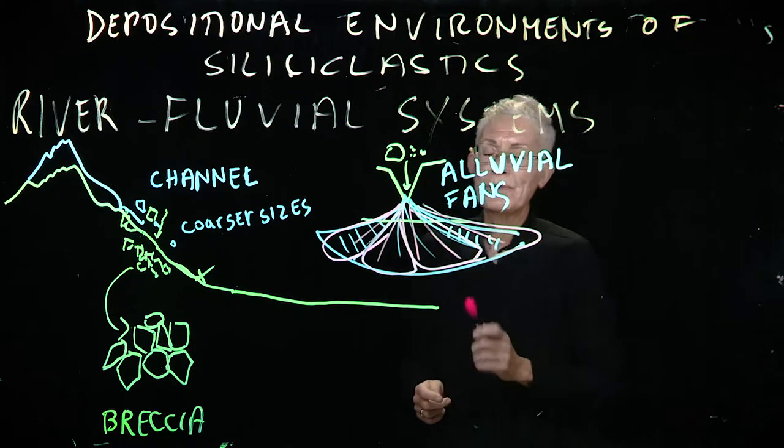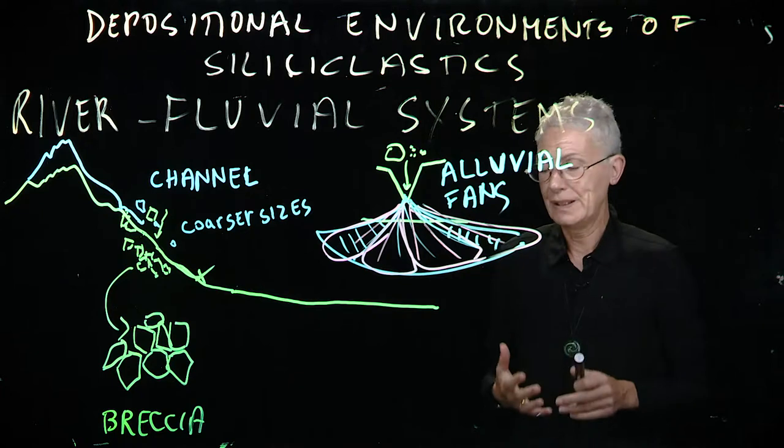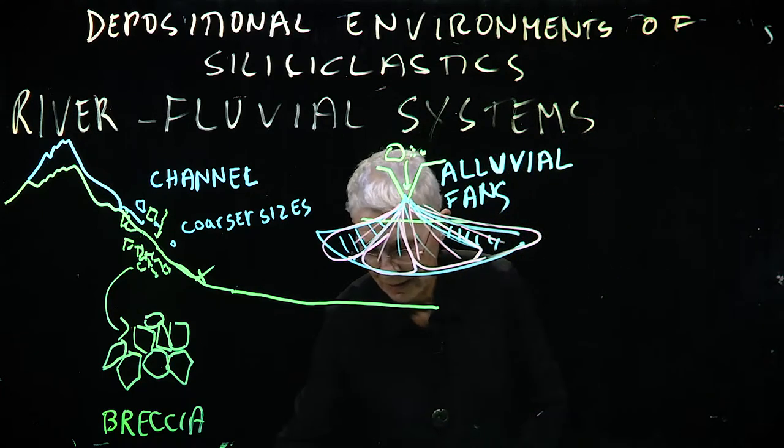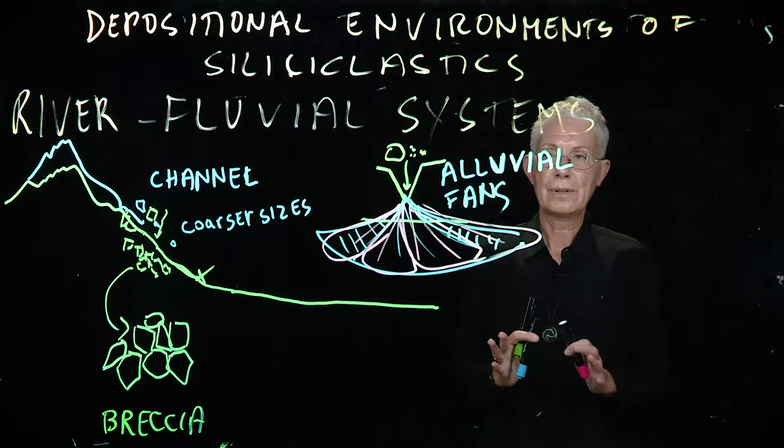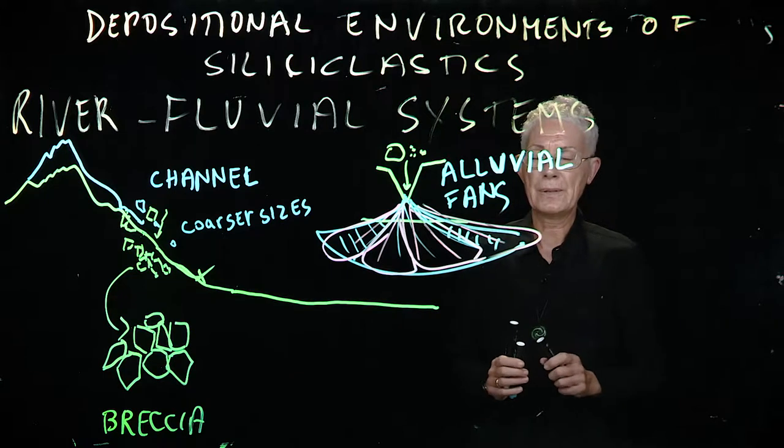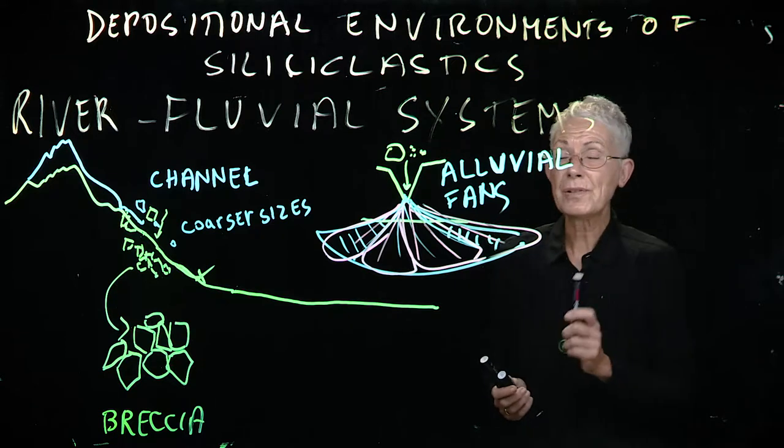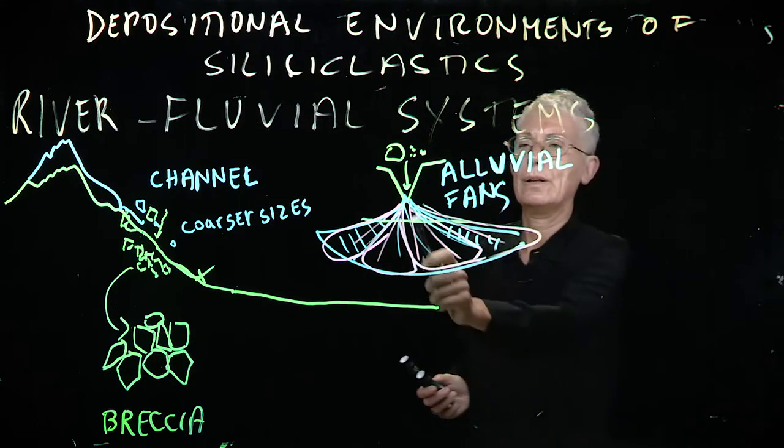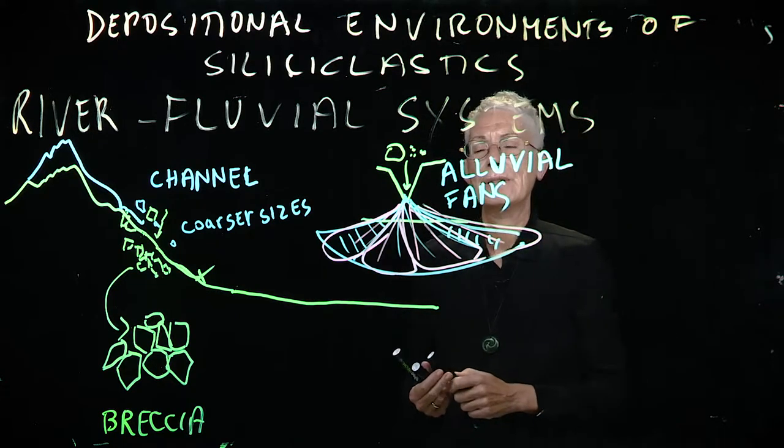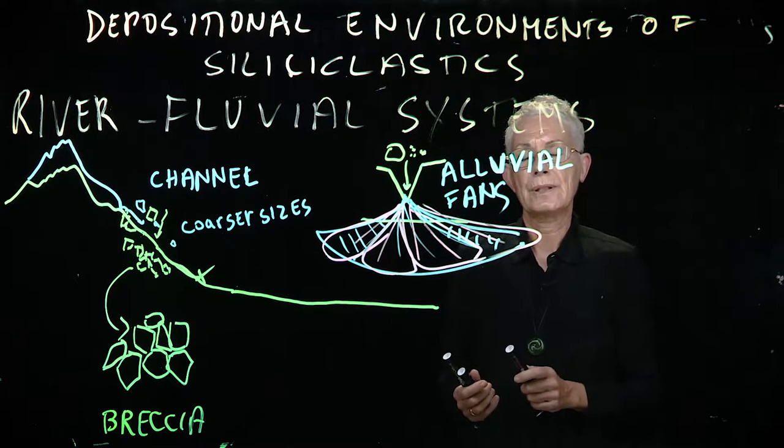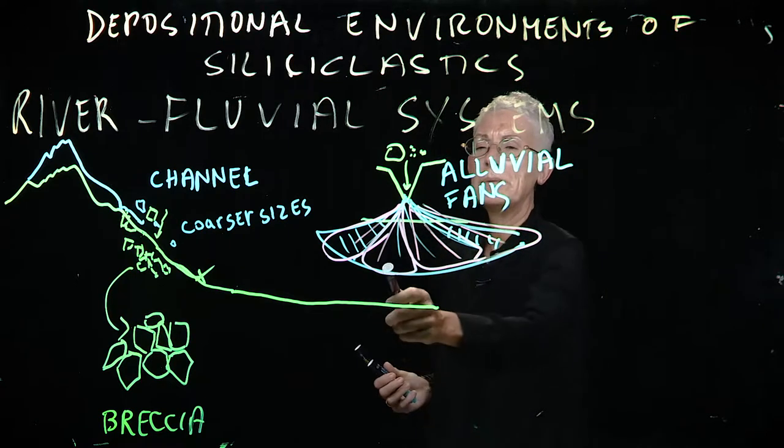The internal structure of these fans is quite complicated. But one of the things that, by now, you should somehow hypothesize is about the type of, the distribution of, I mean, the distribution of the grain size from here to the bottom of the fan, and the sorting. So is this going to be well sorted? How about here? How about here?